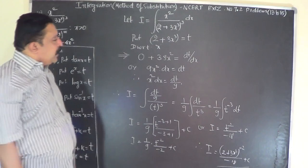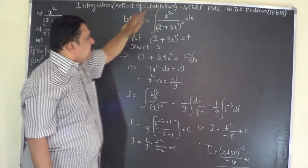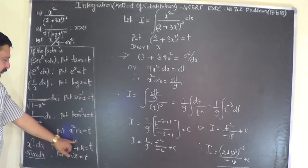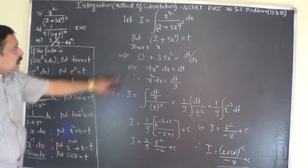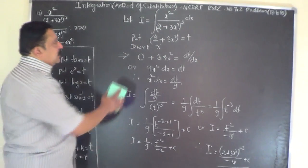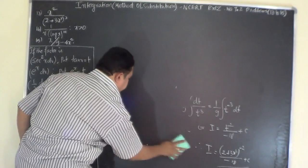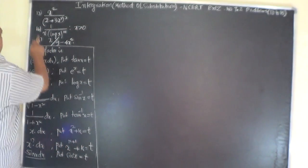Here you observe that 3x³ is in the denominator and you have x² in the numerator. If the problem contains x^n dx, then you put the term containing x^(n+1) as t. Since the problem has x² dx, then x^(2+1) = x³ — the term containing x³ — should be present in the problem for substitution.